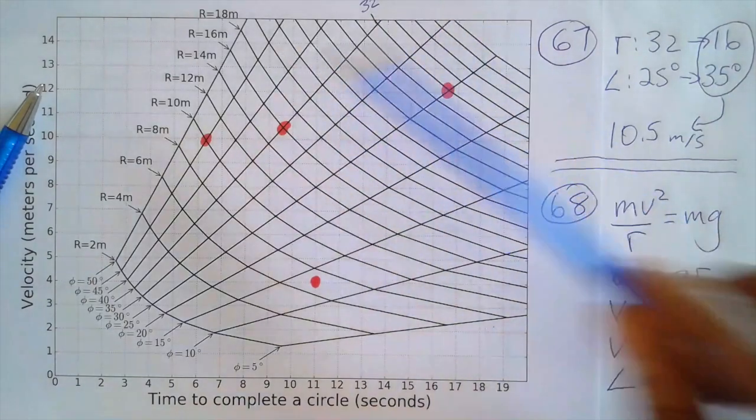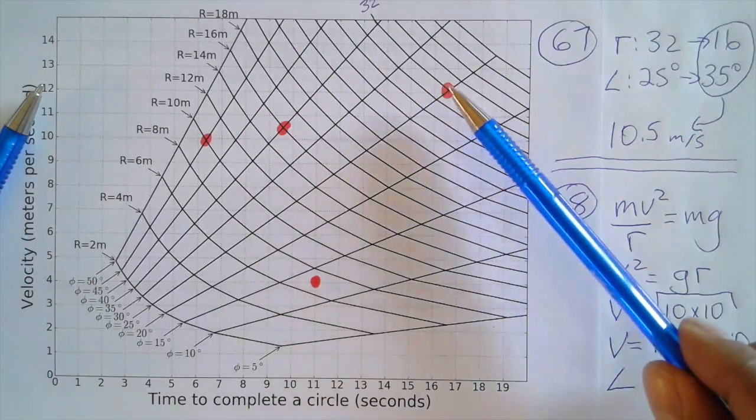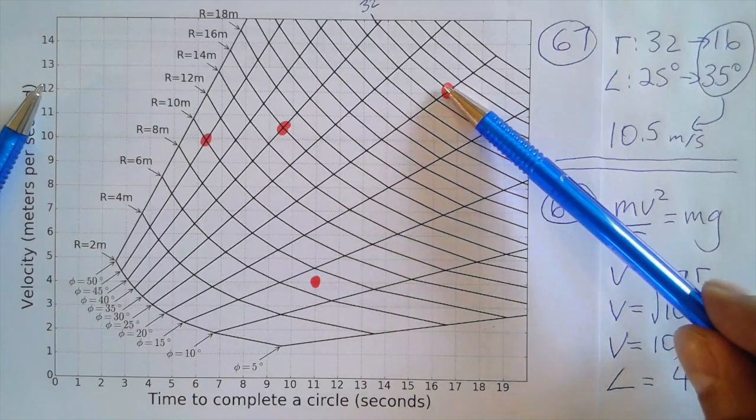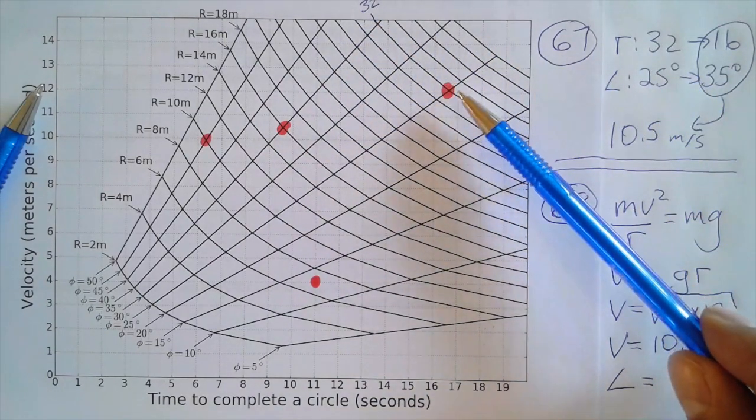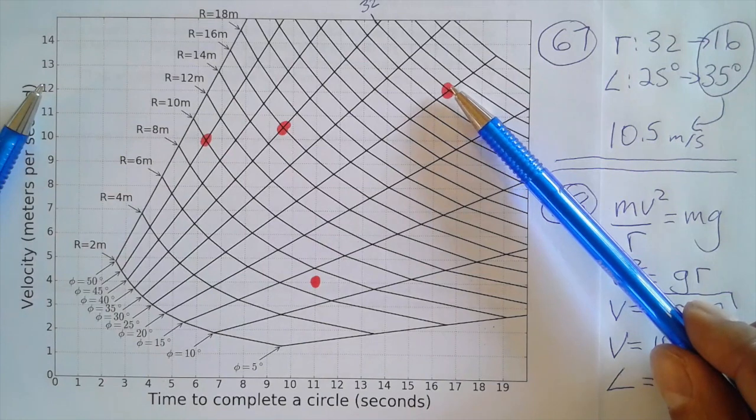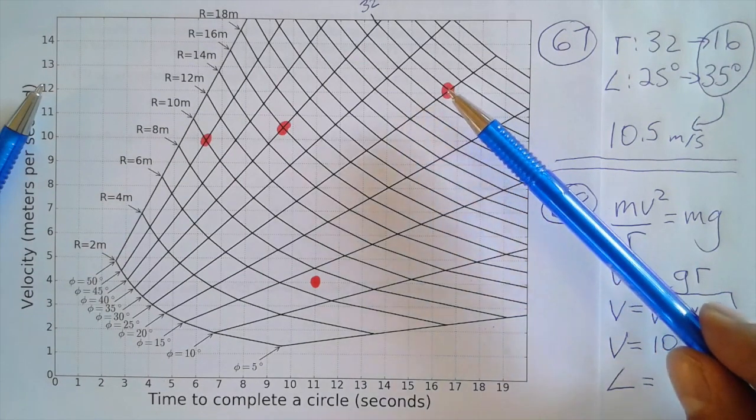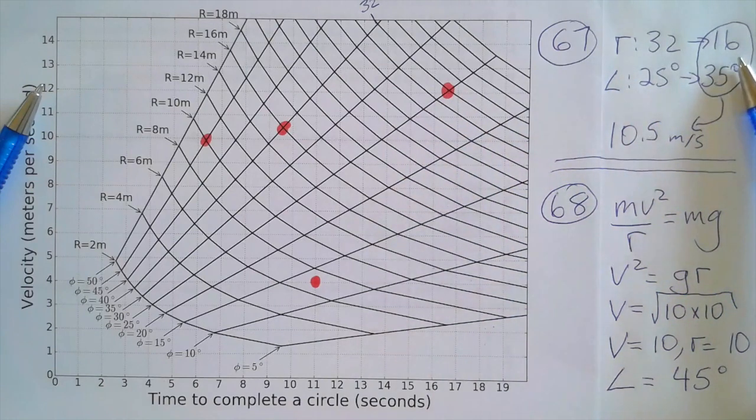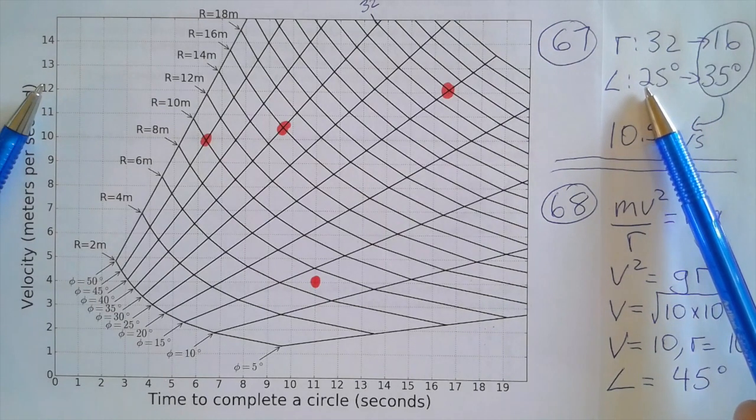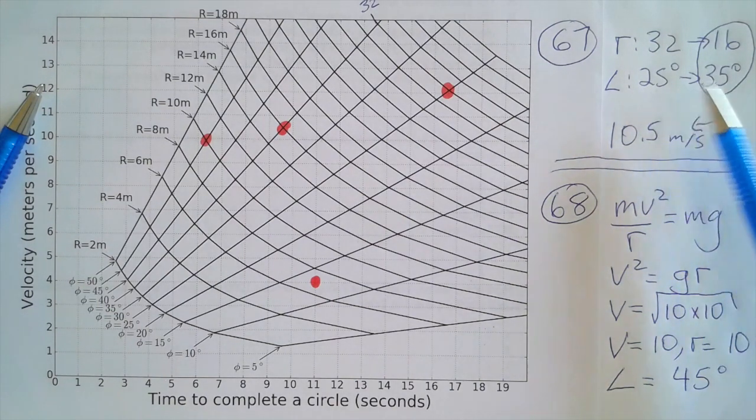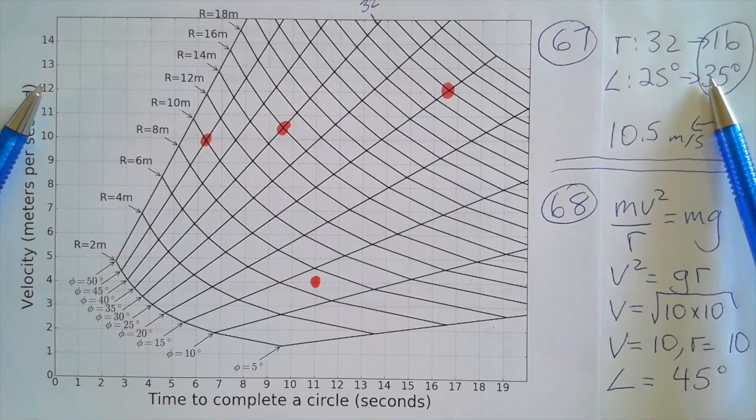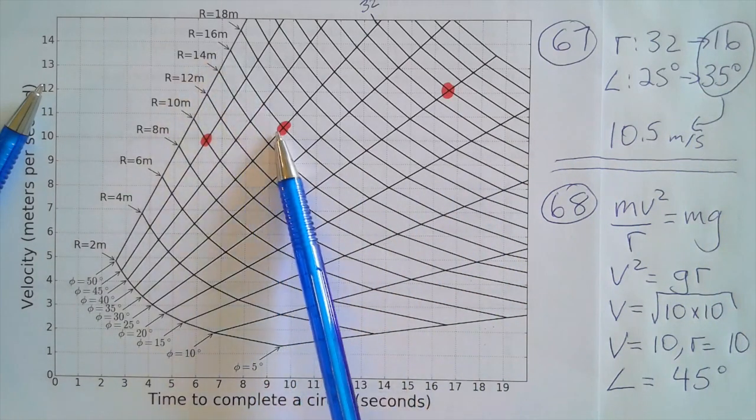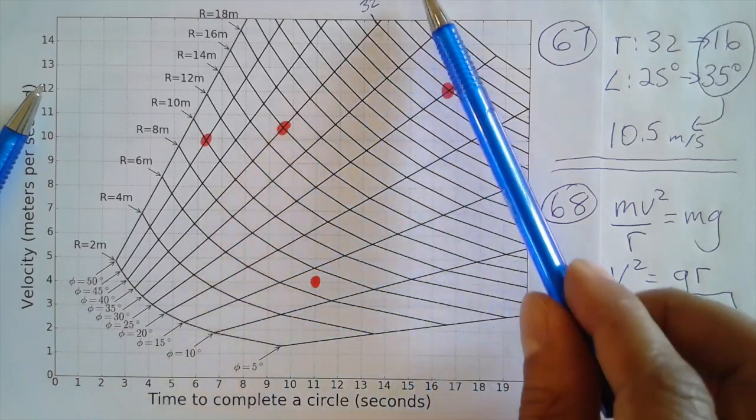The point is that this gives us that the radius is going to be 32. When the question says that if the bird halves the radius of the circular path, that means that the 32 is going to go down to 16, and increases its angle of bank by 10 degrees - well, we've been given 25 degrees as an angle, so if it increases by 10 degrees now we have 35 degrees. Now we're going to look for a radius of 16 with an angle of 35.